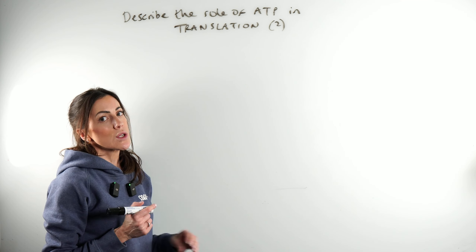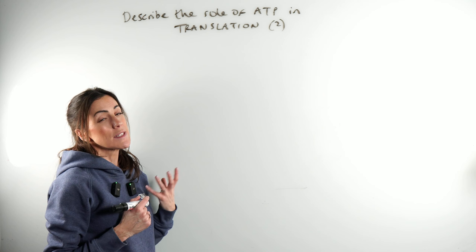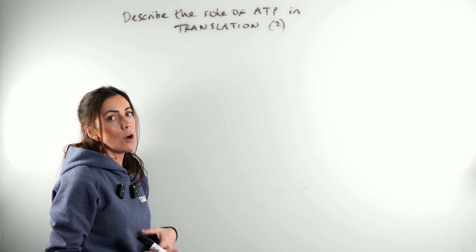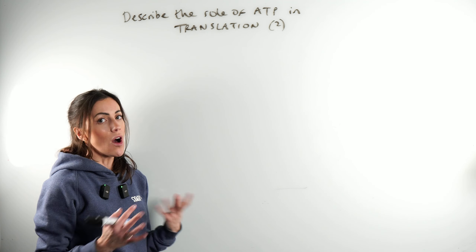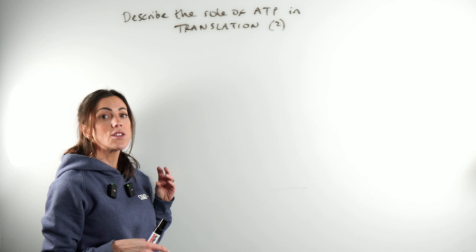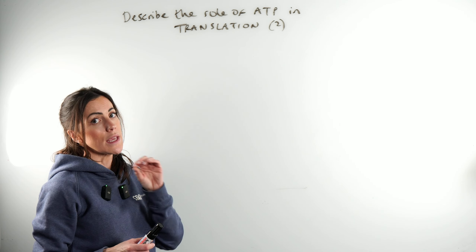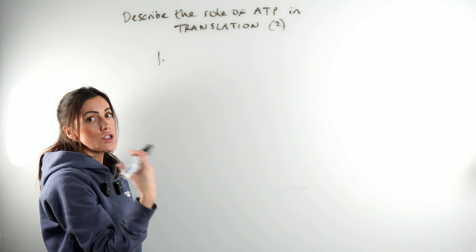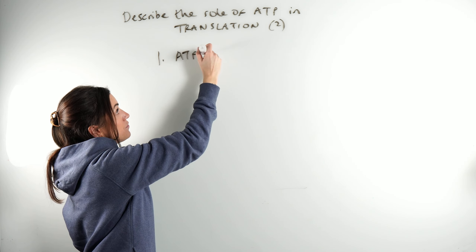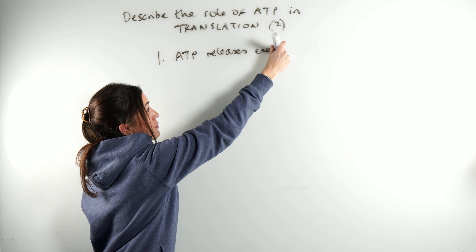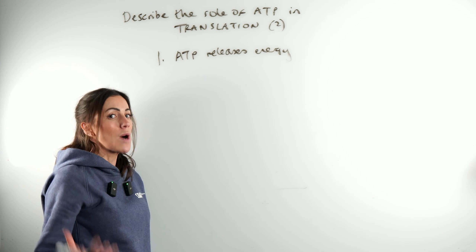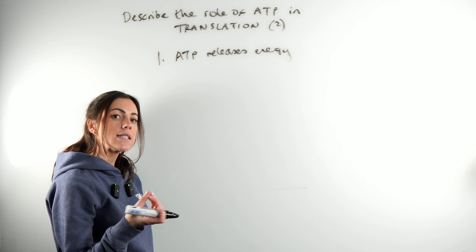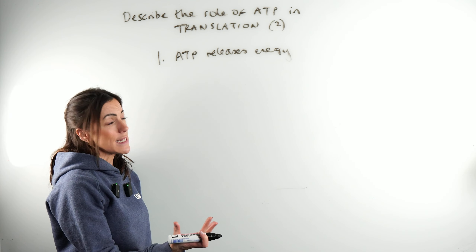Let's look at this two-mark question asking us to describe specifically the role of ATP in translation. This question is not asking for the full story of translation — it's asking us to focus on the specific use of ATP. You're going to get one marking point just for telling the examiner that ATP releases energy. We hydrolyse the bond between the second and third phosphate group and it releases a small amount of energy.